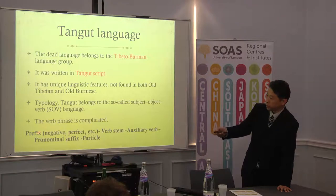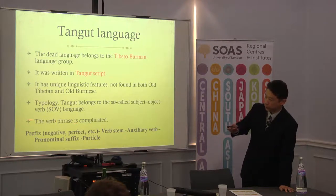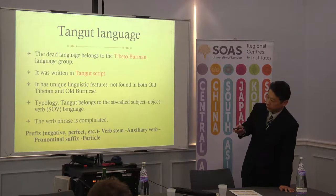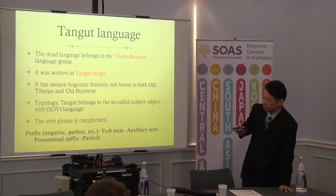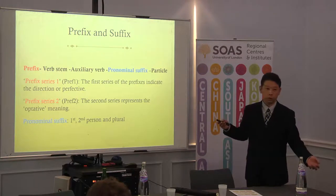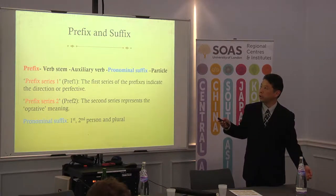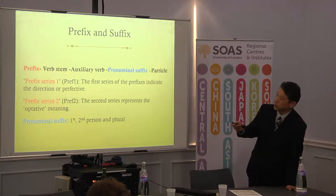Tangut has complicated verb grades in some cases. For example, prefixes including negative, perfect, and others. After that, verb stem and auxiliary verb. And pronominal suffix, especially for pronominal suffix. And particle. For this presentation today, I explained just prefixes and suffixes in Tangut language. This is the main verb — verb stem and auxiliary verb.